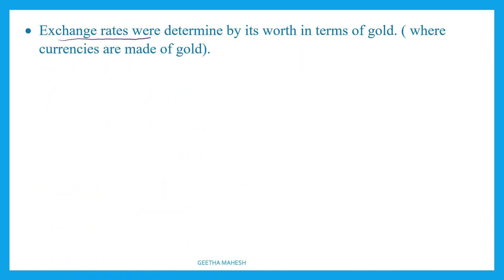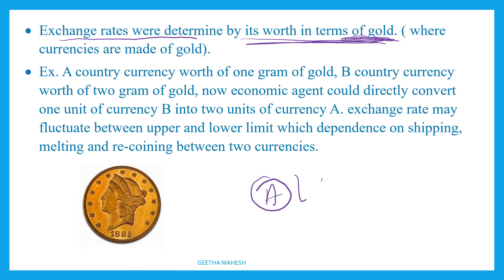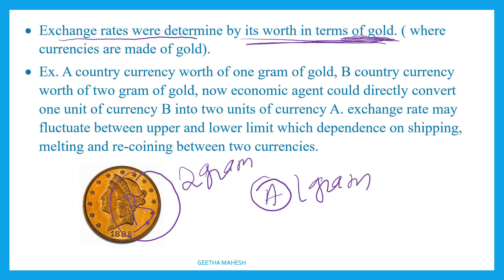Here, exchange rates were determined by the worth of currency in terms of gold. For example, A country's currency is equal to 1 gram of gold, and B country's currency is equal to 2 grams of gold. So this is the fixed exchange rate.